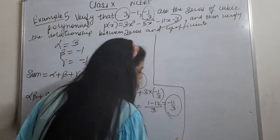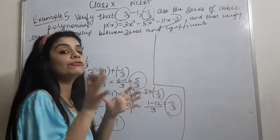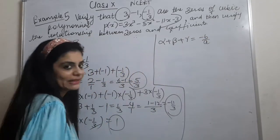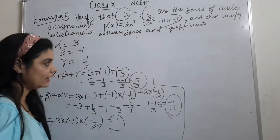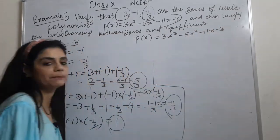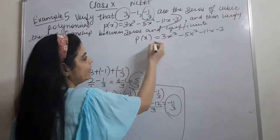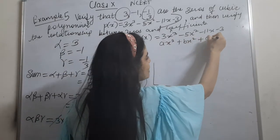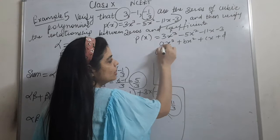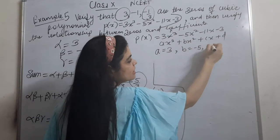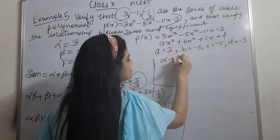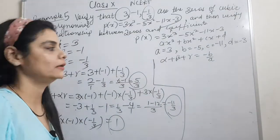And alpha times beta times gamma = 3 × (minus 1) × (minus 1/3) = 1. So our three direct-calculation answers are: sum = 5/3, sum of pairwise products = minus 11/3, and product = 1. Now we use the second method — the formulas. We compare P(x) = 3x³ minus 5x² minus 11x minus 3 with the general form ax³ + bx² + cx + d.